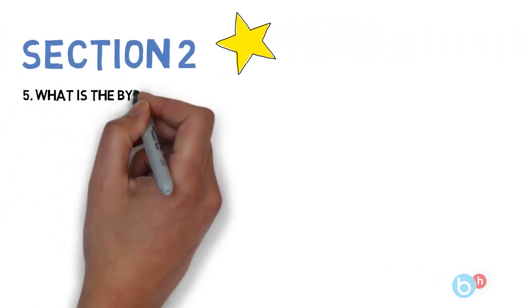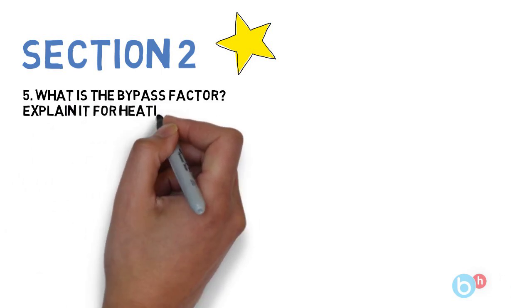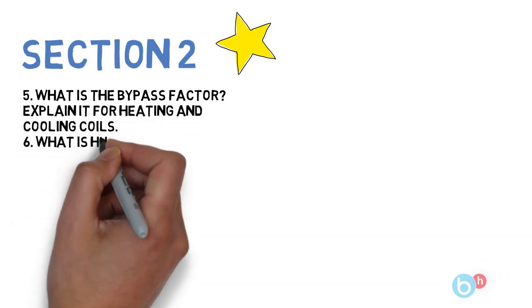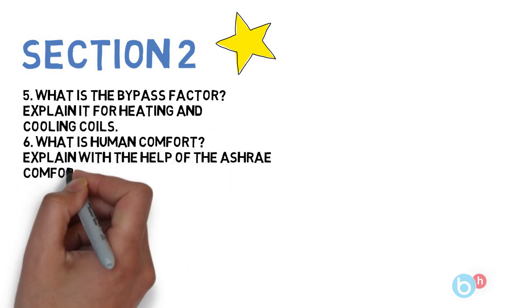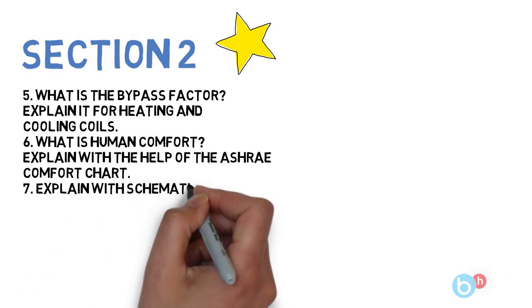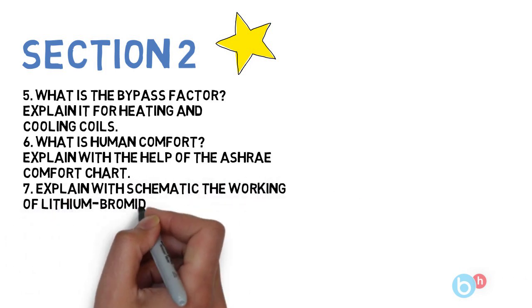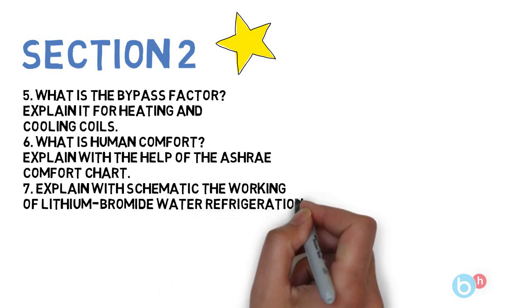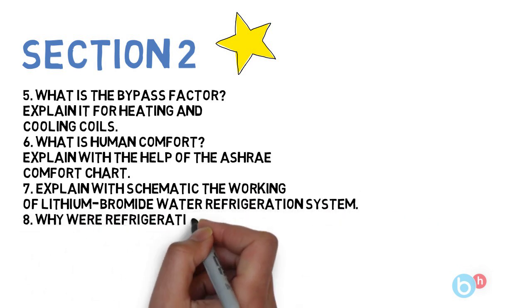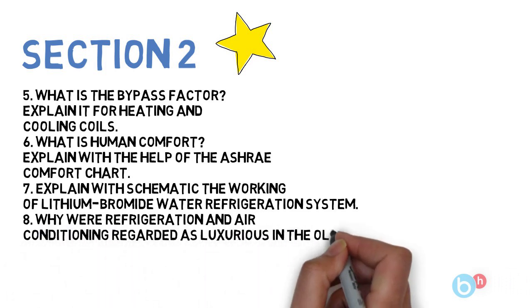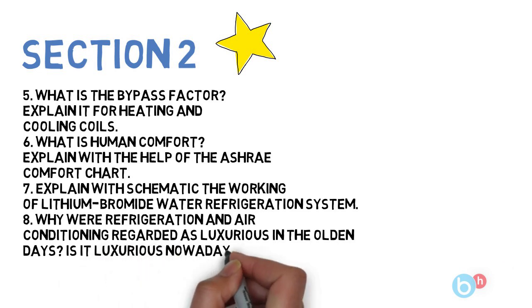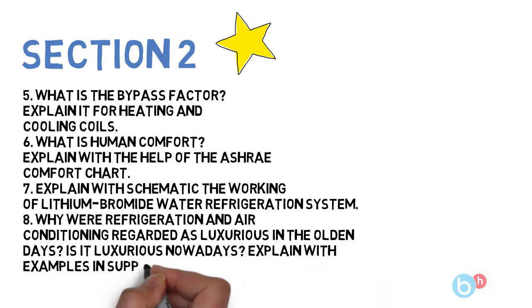So these 4 questions you have to do for section 1. Let's go to section 2, where the first is: what is the bypass factor and explain it for heating and cooling coils. Next is: what is human comfort and explain with the help of ASHRAE comfort chart. Next is: explain with schematic the working of lithium and bromine water refrigeration system. And the last one is: why were refrigerations and air conditioning regarded as luxurious in olden days? Is it luxurious nowadays? Explain with examples in support of your arguments.